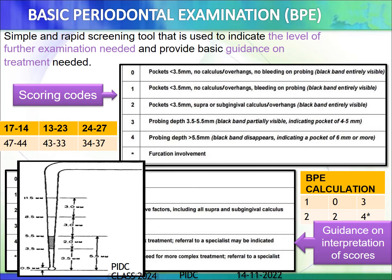There is a black marking at 3.5 to 5.5 mm. Tomorrow when you go to the clinic, check out the probe — you will be able to see the ball as well as the markings. Based on this, we have certain criteria or scoring codes, which indicate how the disease status is being recorded on paper.